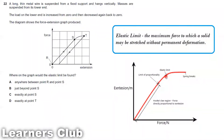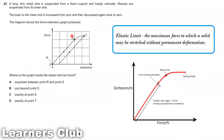The elastic limit is the point where, when you remove your load, the wire can return to its original position. But if you increase the load just after the elastic limit, you will have permanent deformation. So we have to choose where the elastic limit is — it is just after the limit of proportionality, which is just after point S.